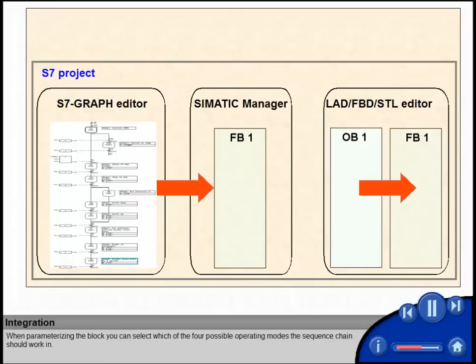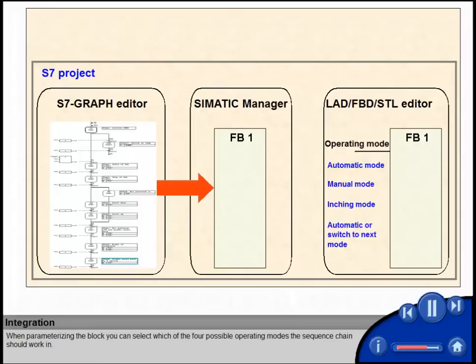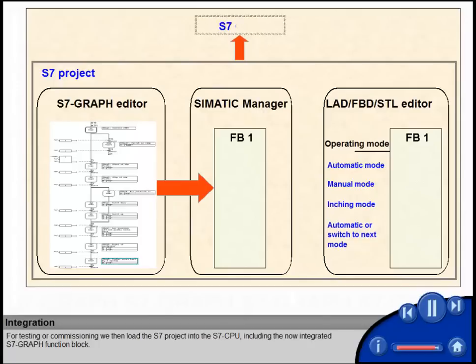When parameterizing the block, you can select which of the four possible operating modes the sequence chain should work in. For testing or commissioning, we then load the S7 project into the S7 CPU, including the now integrated S7-GRAPH function block.